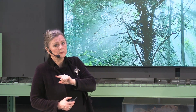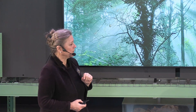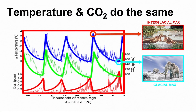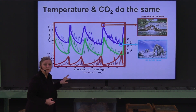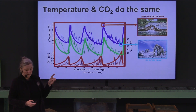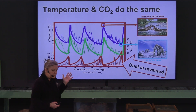If you want to know if a system is dysfunctional, you need to know how it functions under normal circumstances. Here you see the sawtooth pattern of rapid warming and slow cooling four times in a row in the past half million years. Notice that temperature and CO2 are doing the same thing — they go up and down in the same way — but dust does the reverse.